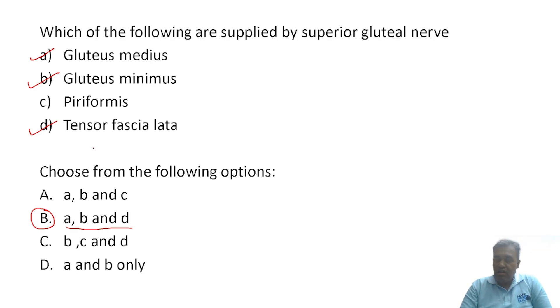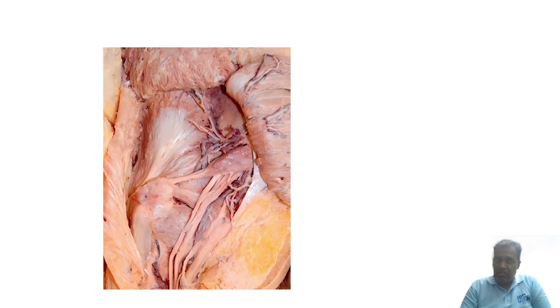Be ready for questions about Trendelenburg also. Gluteus maximus is supplied by the inferior gluteal nerve. Piriformis comes from the sacral plexus directly, coming from the sacrum going through the greater sciatic notch attaching to the femur.